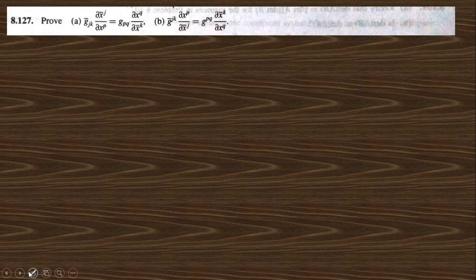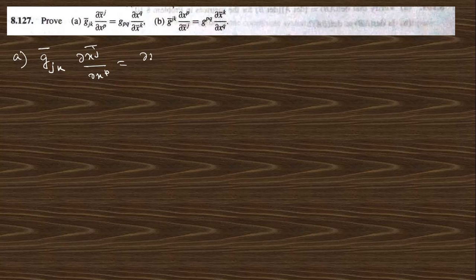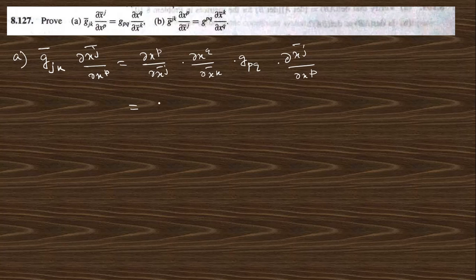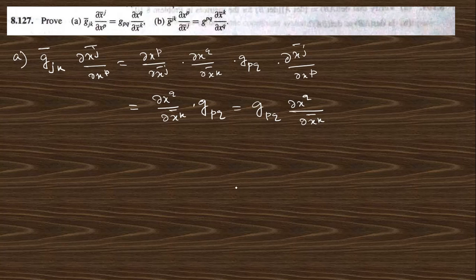Go to the next question: prove the given relation. For question a, the barred g_jk transforms as del x^p over del x^j times del x^q over del x^k times g_pq. Then multiplying by del x^j over del x^p, these two cancel out, and you get g_pq. You can also write it in the reverse format with del x^q.